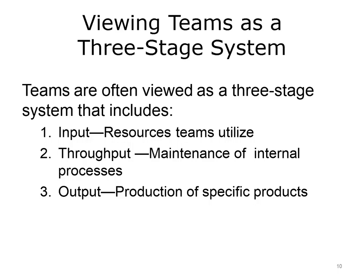Teams are often viewed in a three-stage system that includes the steps of input, throughput, and output. An input can be thought of as the team's resources, such as the team members, any technologies that support the team, and any information that the team needs at the start of a specific project. Throughput, the second stage, is the process that the team engages in to reach their goals and tasks. Outputs, the final stage, are the actual deliverables that the team creates and develops to meet the mission objectives — in other words, the product that they came together to achieve in the first place.